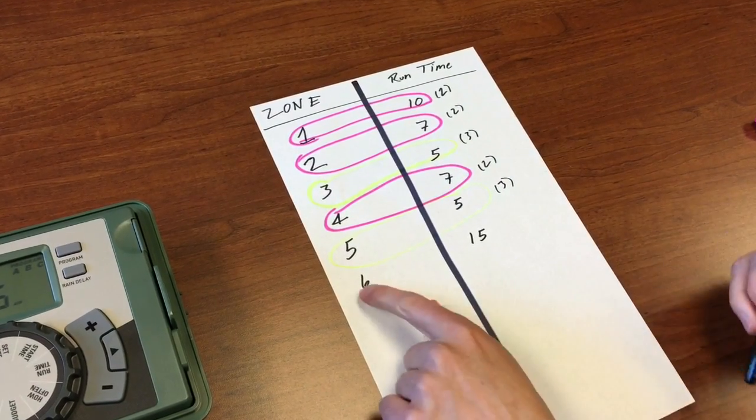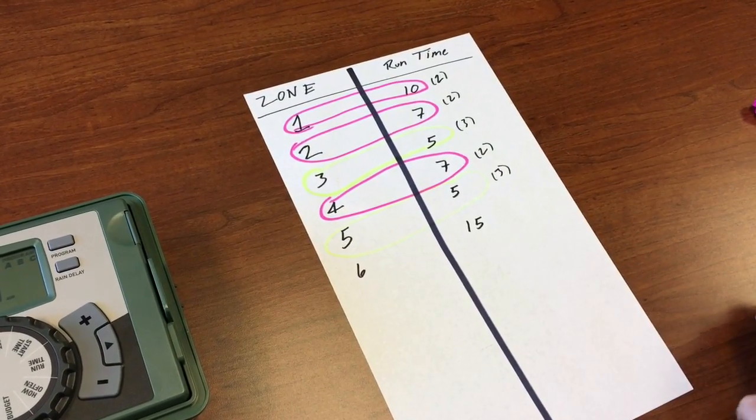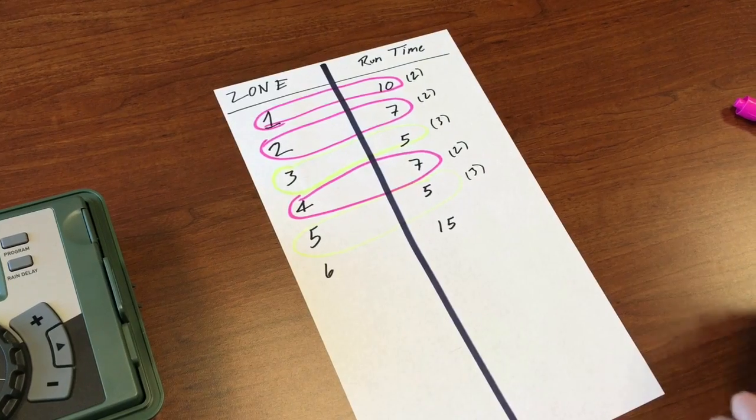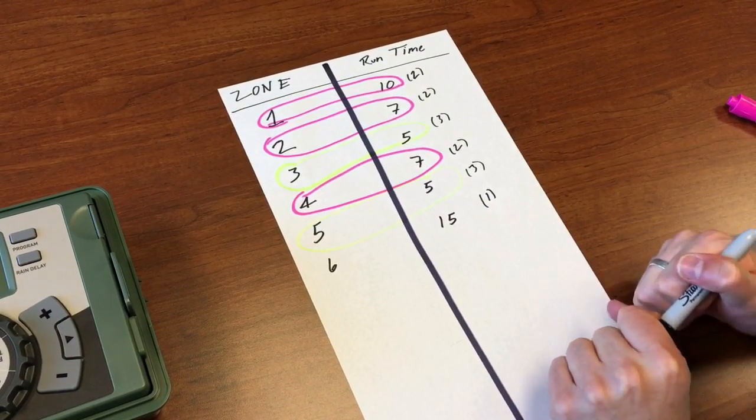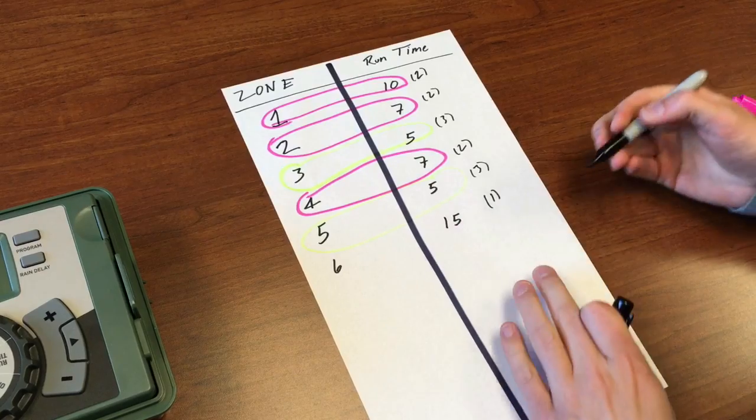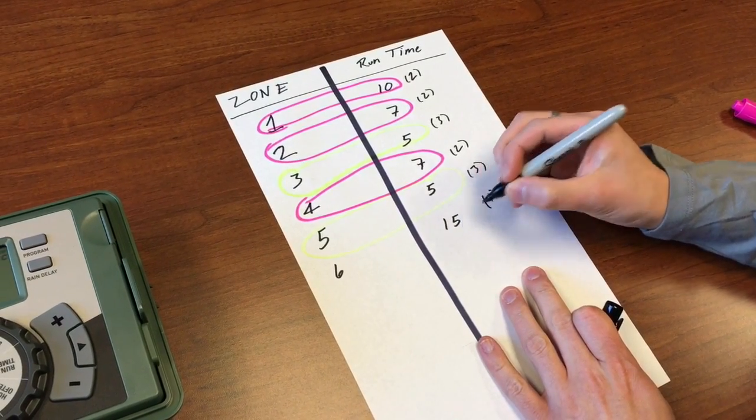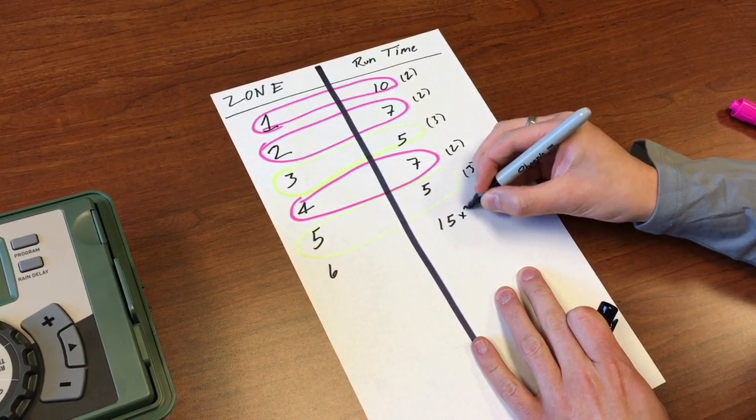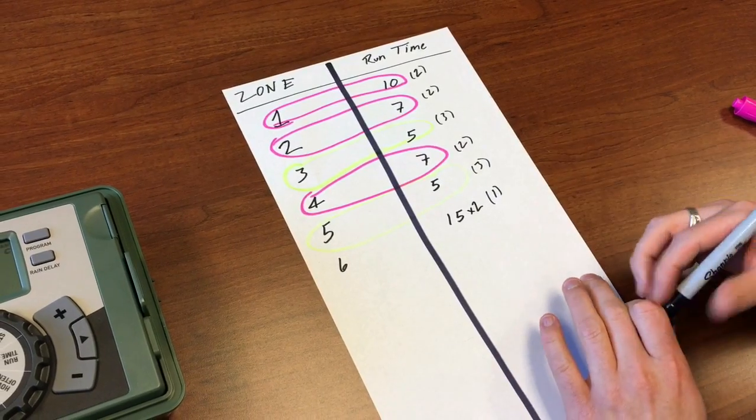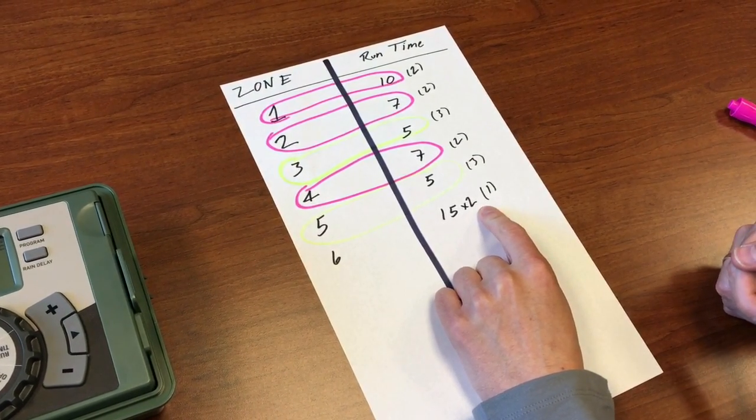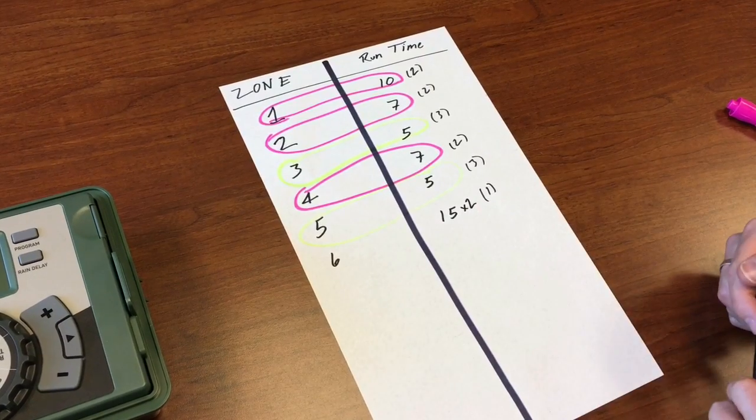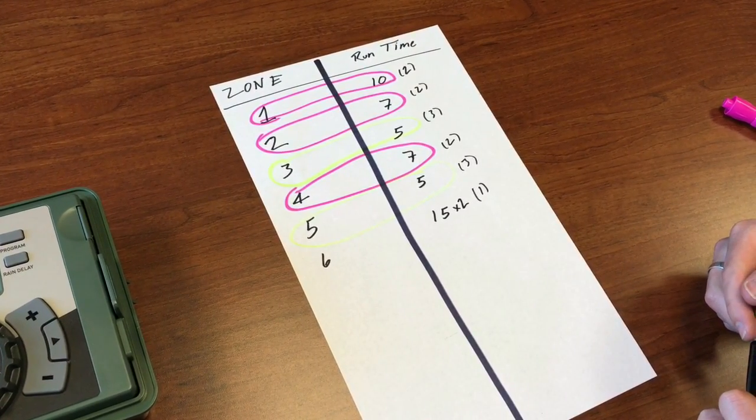This last zone, zone six, this is a drip zone. It needs to run every single day and it actually needs to run 15 minutes, but it needs to run twice a day. So that one's going to have multiple start times every day.